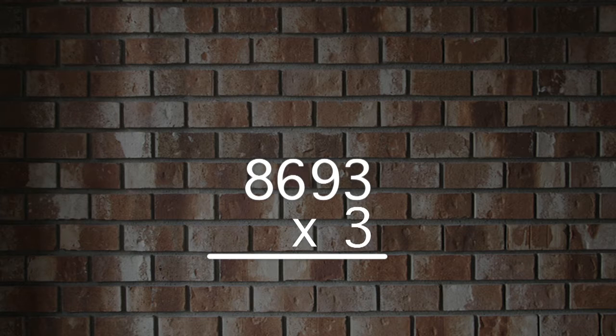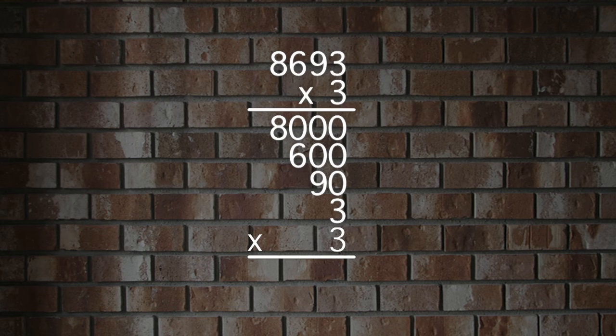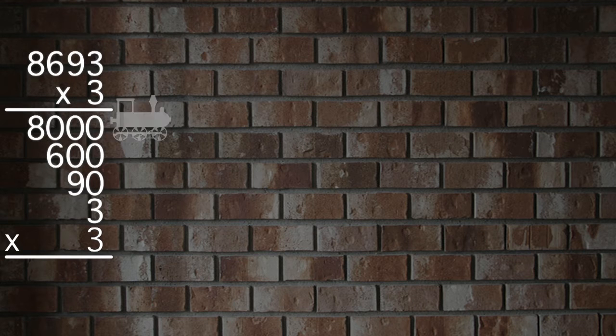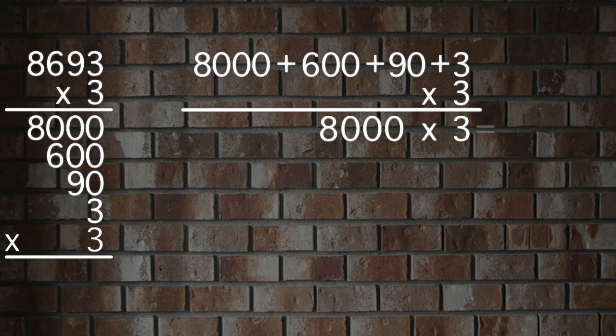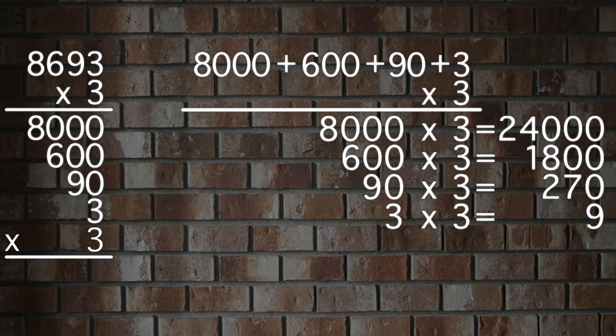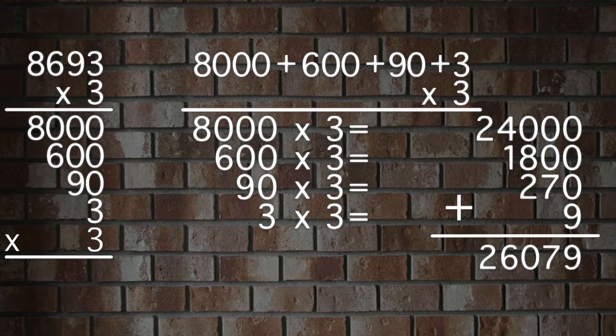Just like there are different ways to write out a number, there are different ways to write down your expanded notation so you can multiply those partial products. Let's bring that last problem back. One way is to stack them all up, writing each piece beneath the next like an upside-down pyramid. Another way is to move those numbers out to the side like railroad cars, then write equations below the stack and add the answers. Either way is fine — you'll see the second style more in your kids' math books, but they're both great tricks to make multiplying big numbers a cinch.